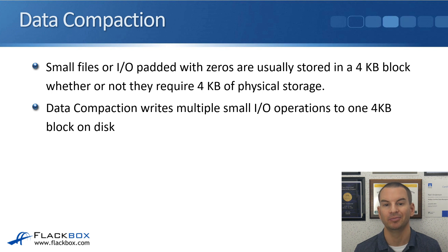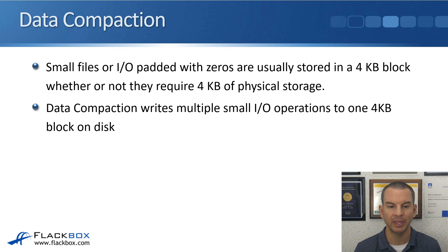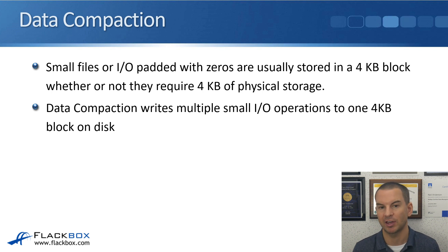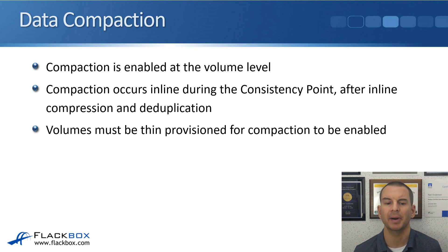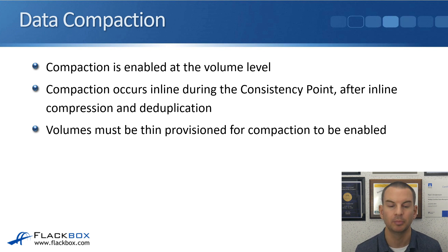Small files or I/O padded with zeros are usually stored in a 4 kilobyte block, whether or not they require 4 kilobytes of physical storage. A file that is only 1, 2, or 3 kilobytes still takes up a full 4 kilobyte block. Data compaction writes multiple small I/O operations to one 4 kilobyte block on disk, squeezing them into the same block. Compaction is enabled at the volume level and occurs inline during the consistency point — after inline compression and deduplication. Volumes must be thin provisioned for compaction to be enabled.